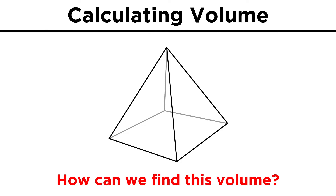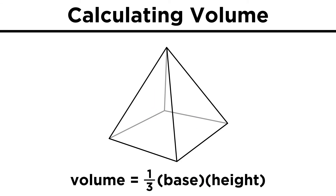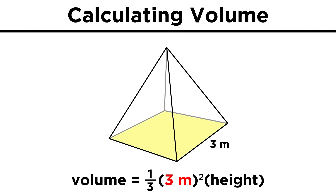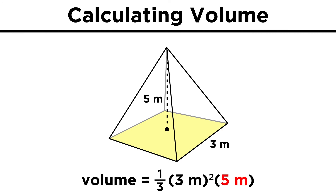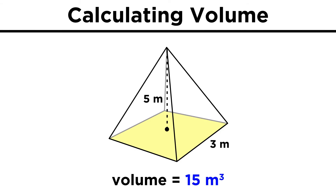Now let's move on to some trickier shapes. How do we calculate the volume of a pyramid? This will be different from a prism, because we can't just multiply the base times the height, as the triangular faces slope inward. Instead, we will use the formula one-third base times height. So if we have a square pyramid with a base length of three and a height of five, we get nine for the base, times five is forty-five, times one-third is fifteen cubic meters.